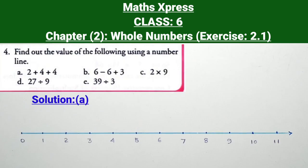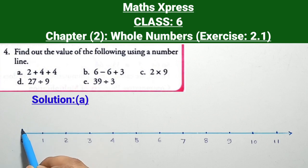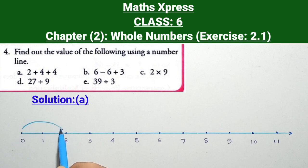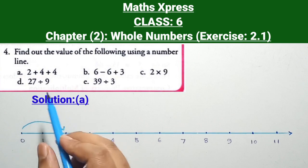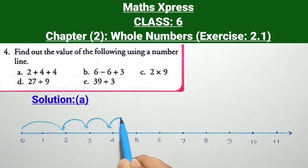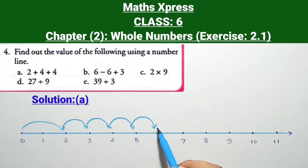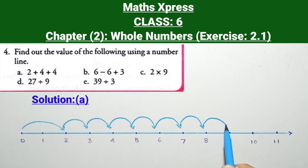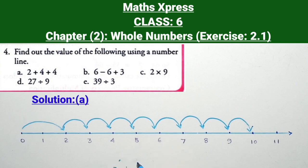Question 2a: 2 + 4 + 4. In this question we first move from 0 to 2 on the number line, then move 4 units forward — 1, 2, 3, 4 — and then again move 4 units forward — 1, 2, 3, 4. Therefore, 2 + 4 + 4 = 10.